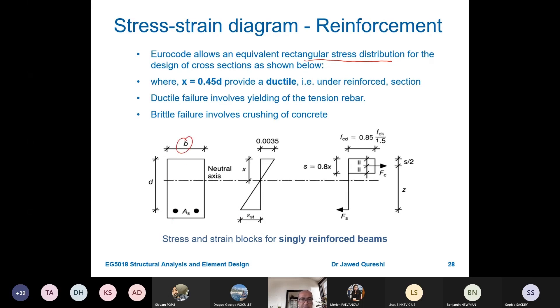Euro Code uses equivalent rectangular stress distribution. Where x here you have this width of the beam, this is a cross section of the beam, and the depth of the beam. Depth of the beam is always counted from middle of the reinforcement to the top, and then you have neutral axis. This is ultimate strain 0.0035, and this is the strain in the steel.